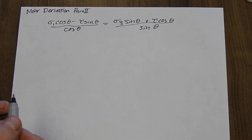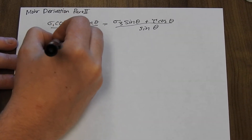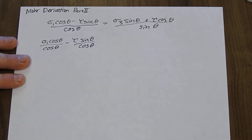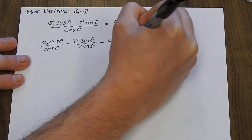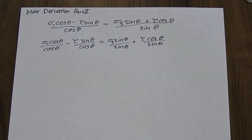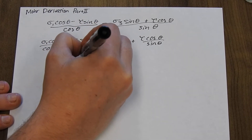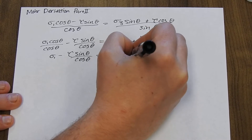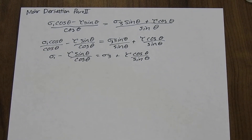Rather than cross multiplying, I noticed some things that could cancel. So I'll do sigma_1 cosine(θ) over cosine(θ) minus tau sine(θ) over cosine(θ), and divide sine on this side too. The cosines cancel and the sines cancel, leaving sigma_1 minus tau·sine(θ)/cosine(θ), and similarly those cancel to just leave sigma_3.